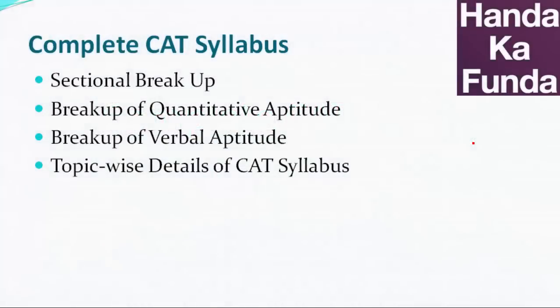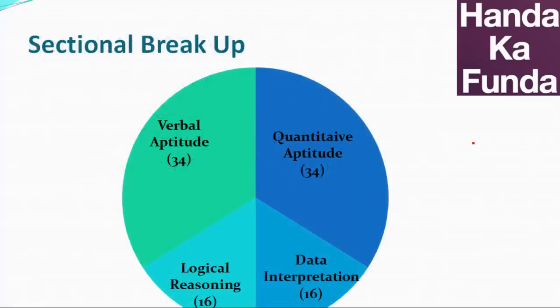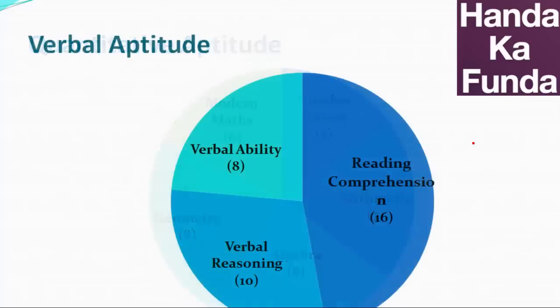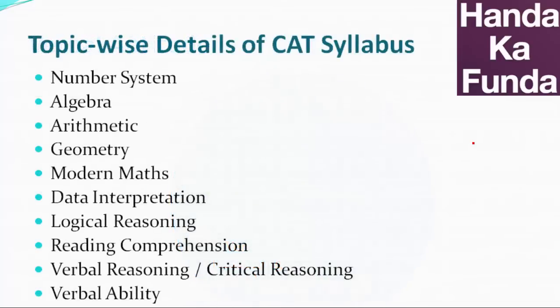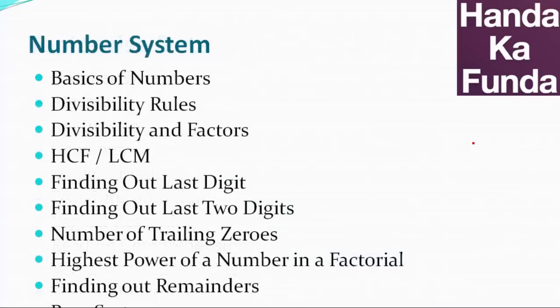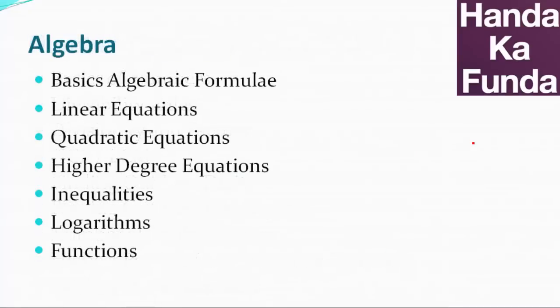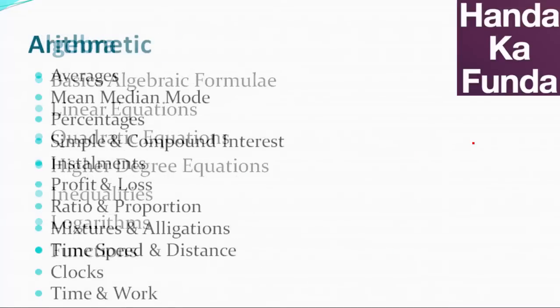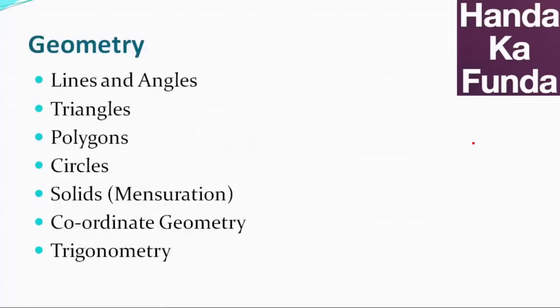Now, we have had a few videos in the series. I recommend that you watch those videos first. In those videos, we have talked about what the sectional breakup of the various sections is, what does quantitative aptitude consist of, what does verbal aptitude consist of. And we have also discussed in detail the various topics which are number system, algebra, arithmetic, geometry.